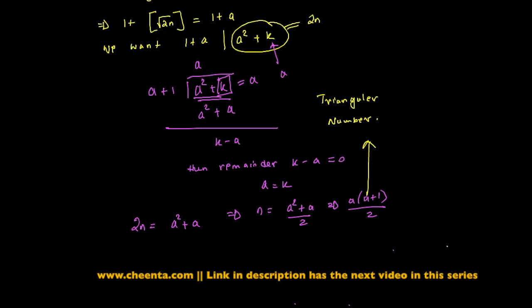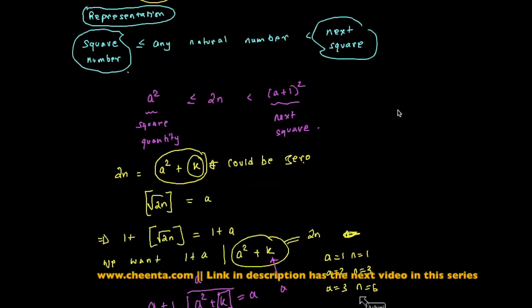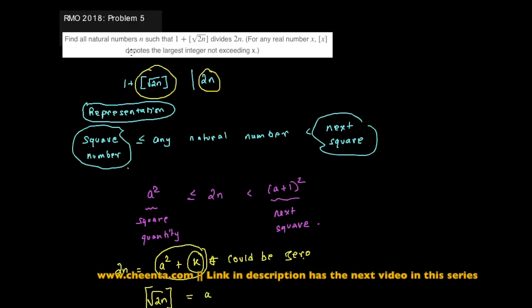And example is, if you plug in a is equal to 1, you'll get n is equal to 1. A is equal to 2 will give you n equals to 3. A equals to 3 will give you n equals to 6, and so on. These are the triangular numbers. And these are precisely the numbers which satisfy this property that 1 plus floor of square root of 2n will divide 2n.